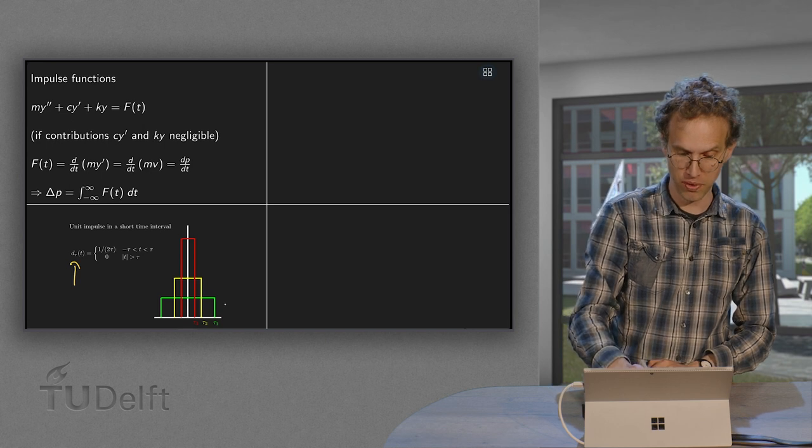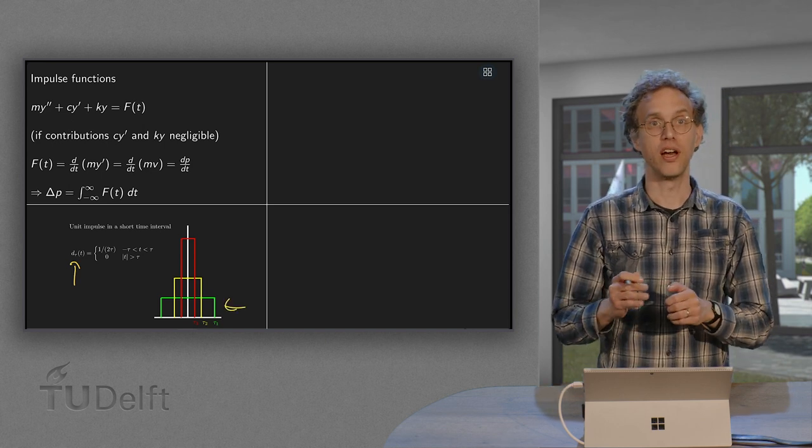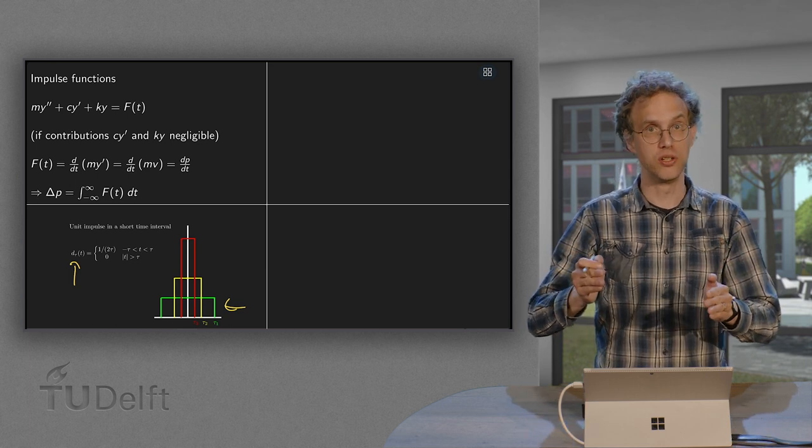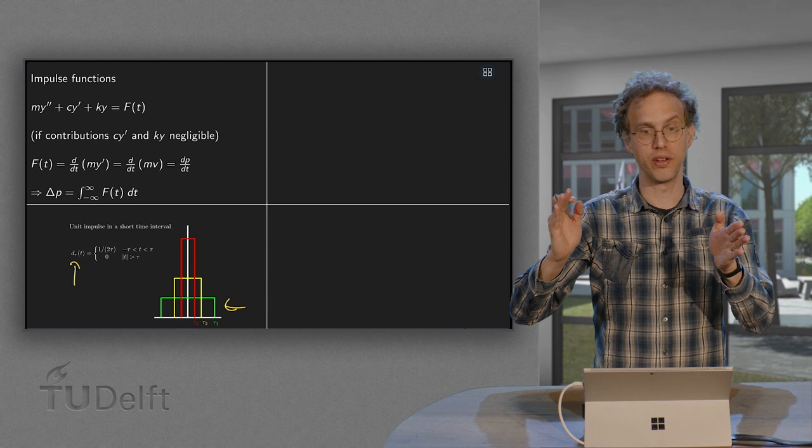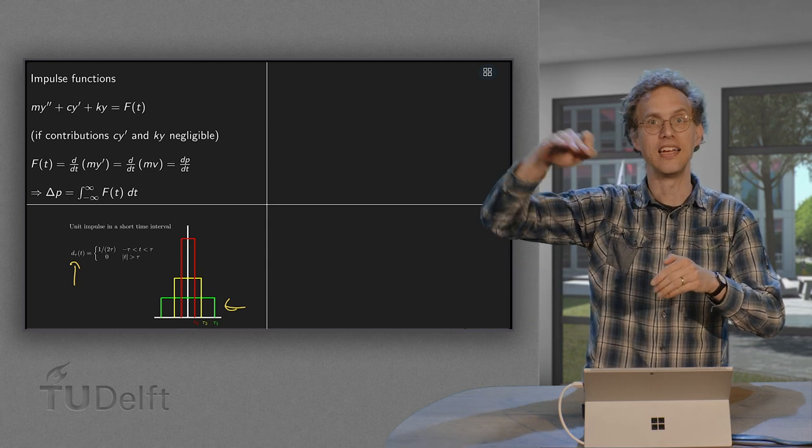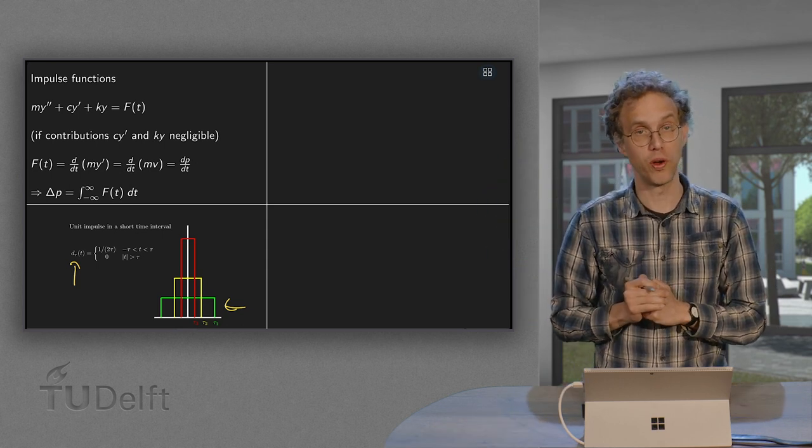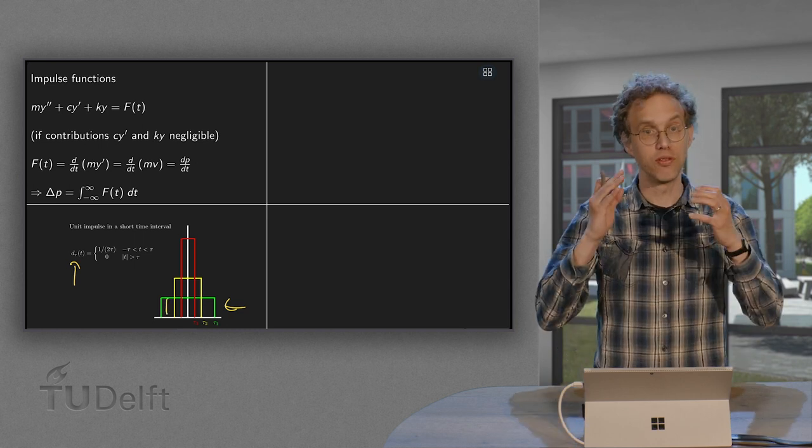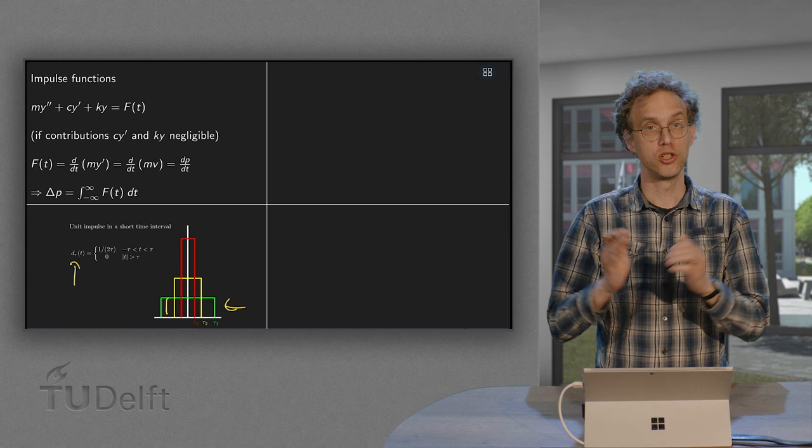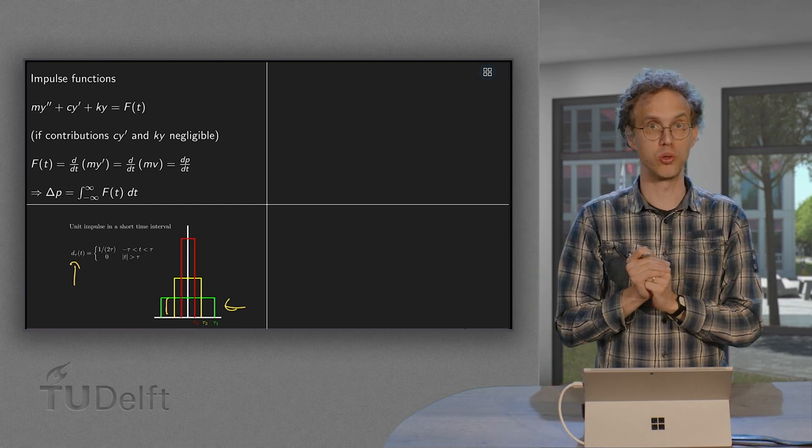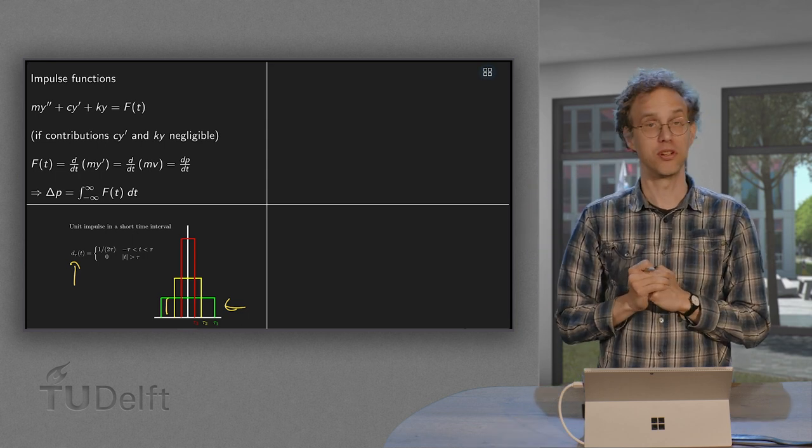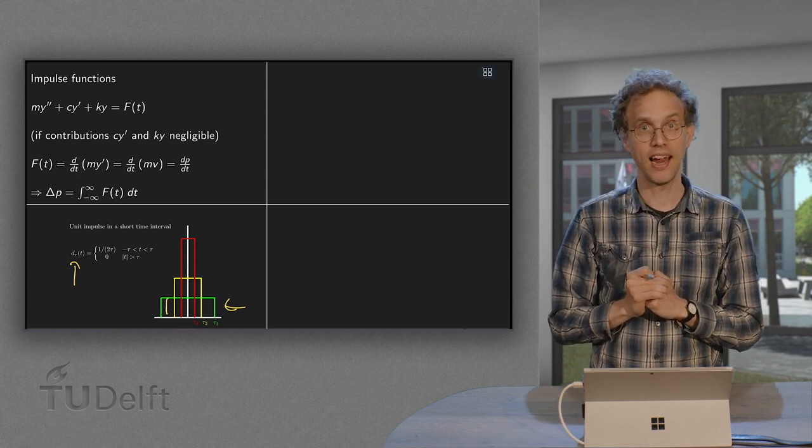So for example, here we have the green one where the constant τ is chosen as τ₁. So the function is non-zero between minus τ₁ and plus τ₁. The height is 1/(2τ₁) such that the area in green under there equals one. Or we can choose a smaller τ, a τ₂. So what happens? The whole thing gets smaller but also higher, because you want to keep the same area.